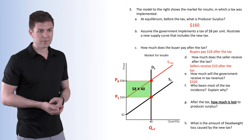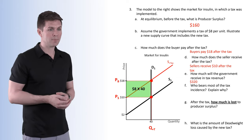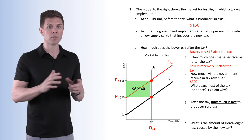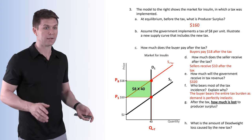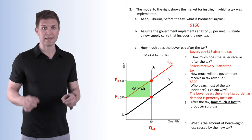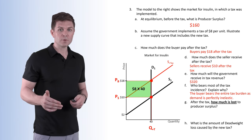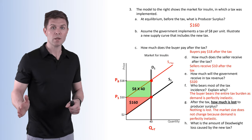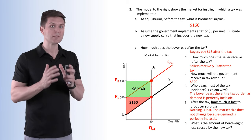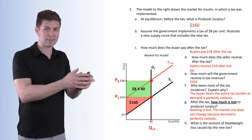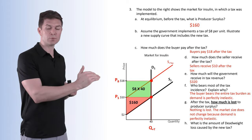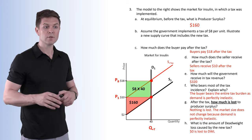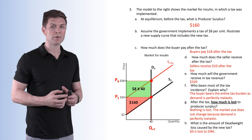Who bears most of the tax incidence? Because demand is perfectly inelastic, the buyer pays the entire burden of the tax — the seller is not hit at all. After the tax, how much is lost to producer surplus? Nothing. We started at $160 and end at $160. The market size has not changed. The buyer has perfectly inelastic demand and cannot change how much they buy — they need insulin. Price received by the seller doesn't change, so producer surplus doesn't change. Deadweight loss is zero, because the market size didn't change.